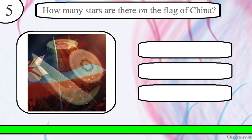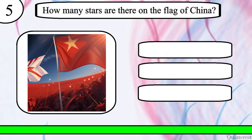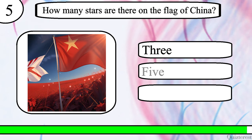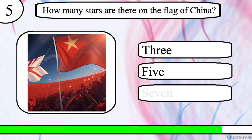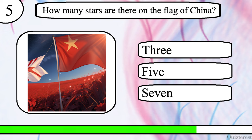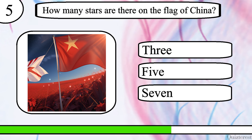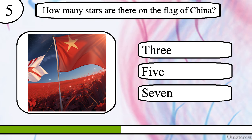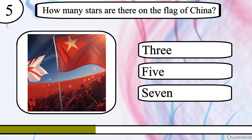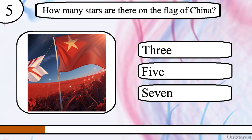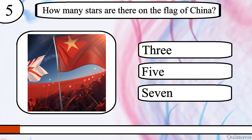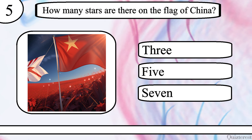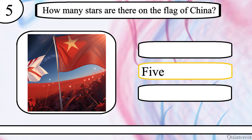Question 5. How many stars are there on the flag of China? 3, 5 or 7? The correct answer is 5.